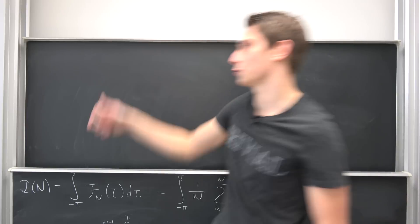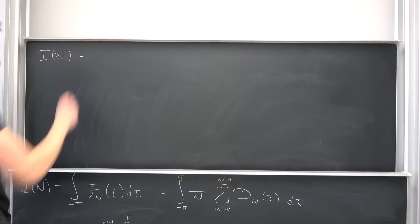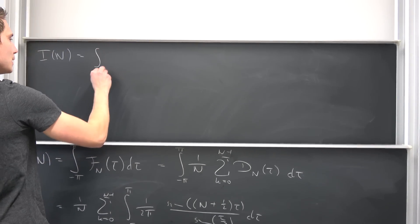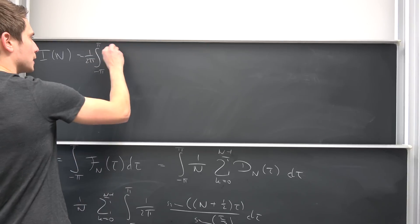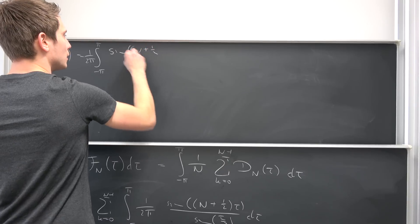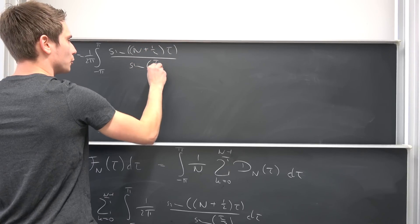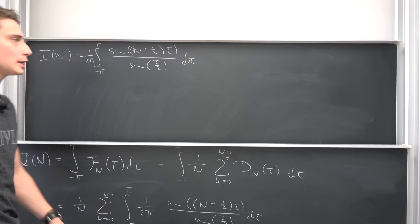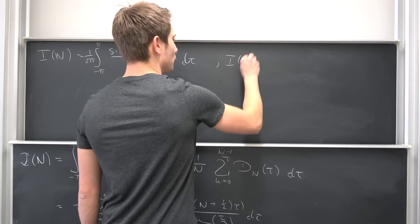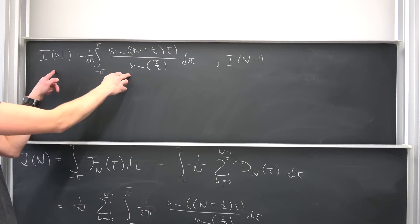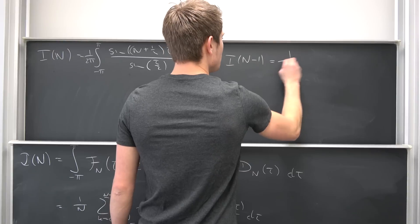We're going to take a look at this very integral right here. So let us define I with respect to capital N as nothing but the integral from negative pi to pi. Let's bring the 1 over 2 times pi to the outside. Then we have sine of (n plus one-half) times tau over sine of tau over 2, d tau. And I would also like to introduce another integral, namely I of n minus 1 — just what we have here, but with the degree changed.